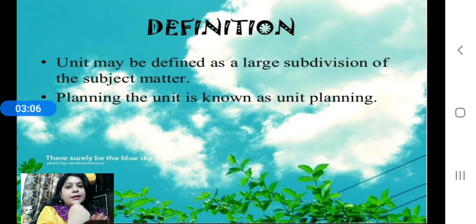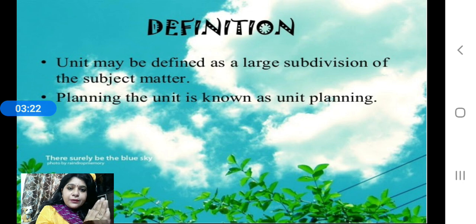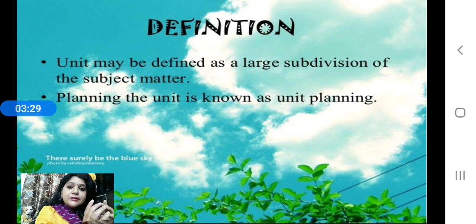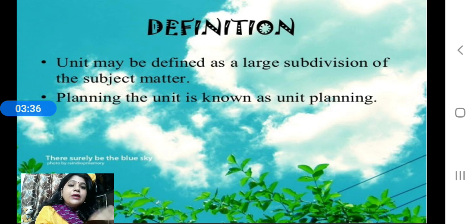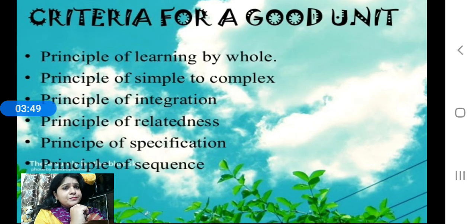A unit may be defined as a large subdivision of the subject matter. Planning the unit is known as unit planning. The unit may be defined as a large subdivision of a subject matter — whatever is your subject, like language, science, math, or other subjects. In every subject matter we have certain units, and planning the unit is known as unit planning. In one subject matter there may be three, four, five, or ten units, and planning each individually is unit planning.